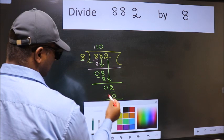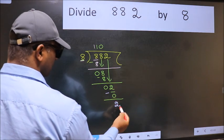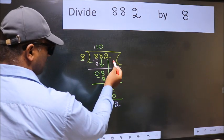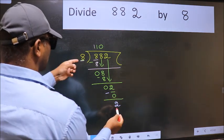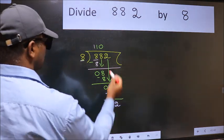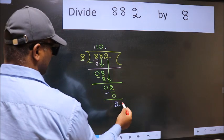Now we subtract. We get 2. Over here, we did not bring any number down. And 2 is smaller than 8. So, now we can put dot and take 0.